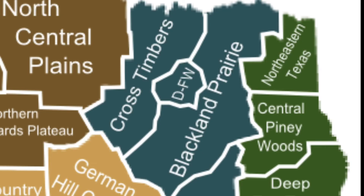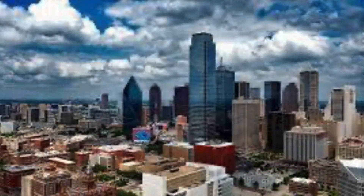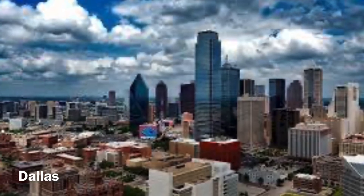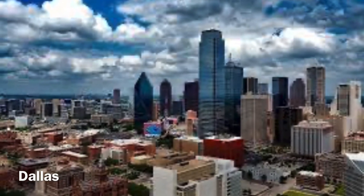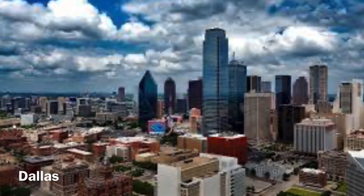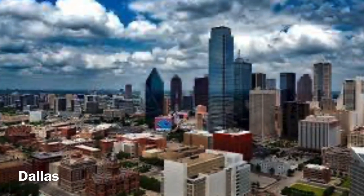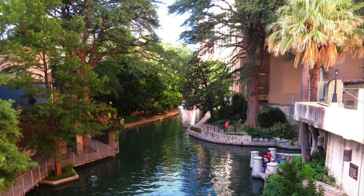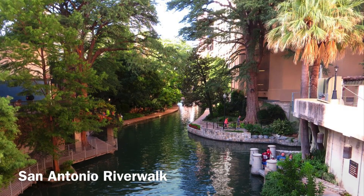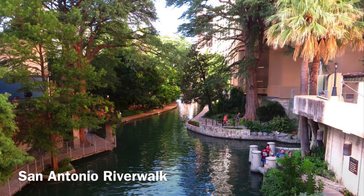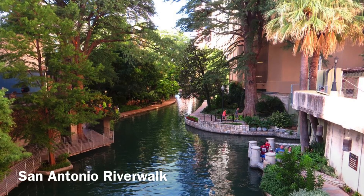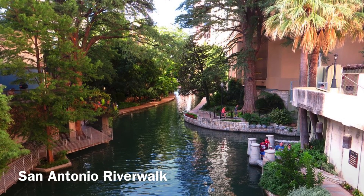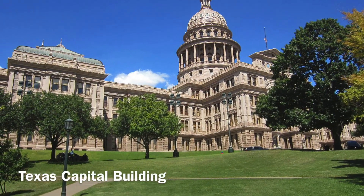Moving west within the Coastal Plains, the next sub-region is the Blackland Prairie, the area around Dallas, the third largest city in Texas. It is a major cotton growing area, and Dallas is a major center for business, technology, and finance. Moving south through the Blackland Prairie, other cities include San Antonio, the second largest city in Texas, which has military bases and tourism, as well as Austin, the capital of Texas.